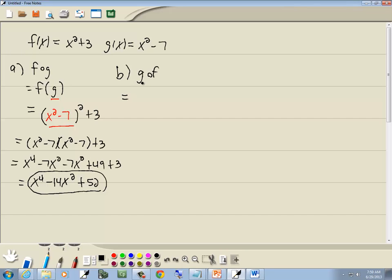Part B, we want to find a composition of g and f, which is g of f. So I'm going to take my g of x, which is x squared minus 7, and everywhere I have an x, I'll put it inside of parentheses. So I've got parentheses squared minus 7.